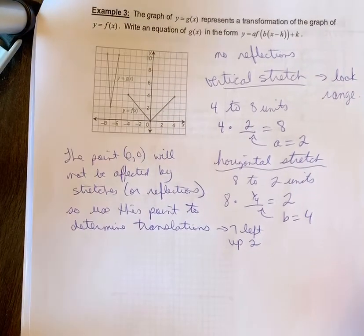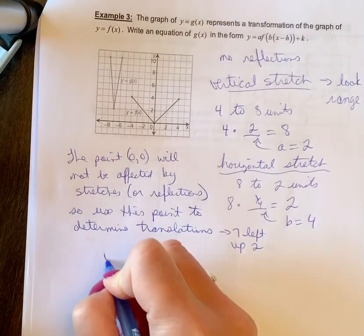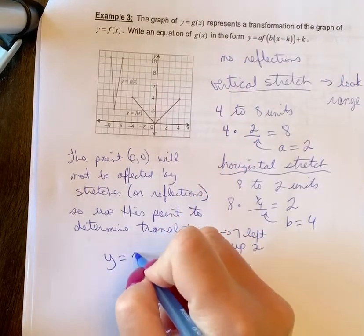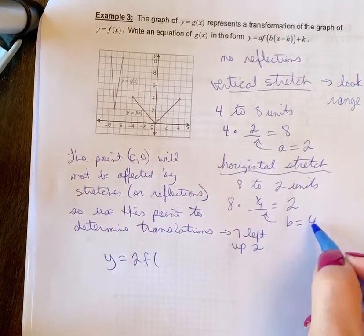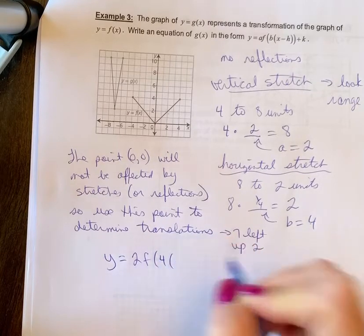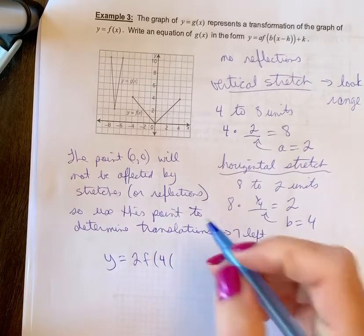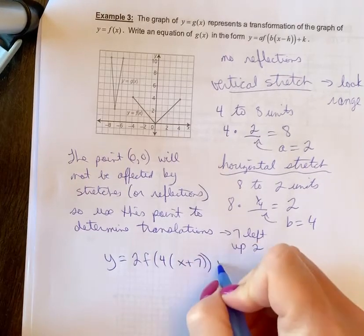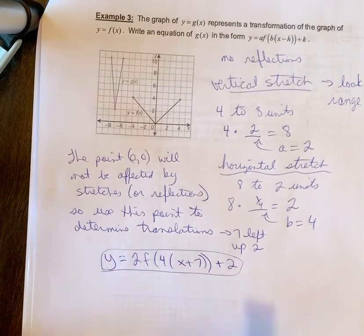So my graph then, or sorry, my equation then, putting this all in, is in this form. So a is 2, f of, b is 1, sorry, 4, left, so we're going to go x plus 7, up 2. So here is my equation.